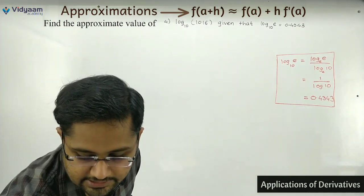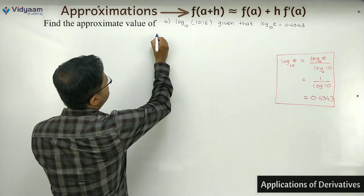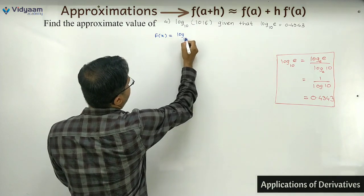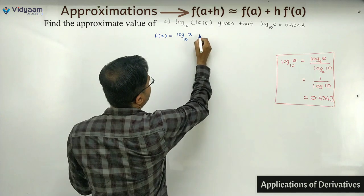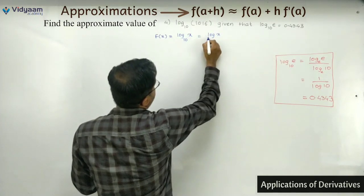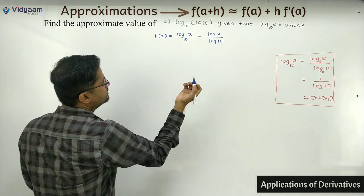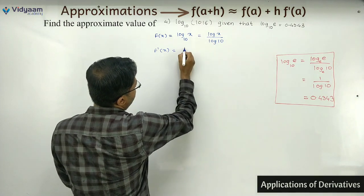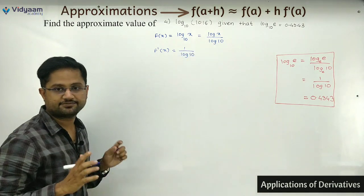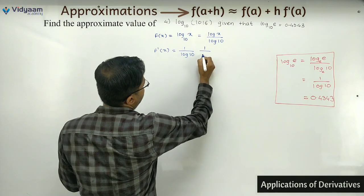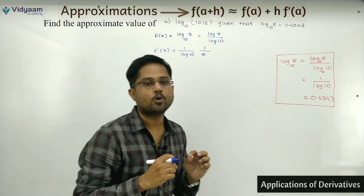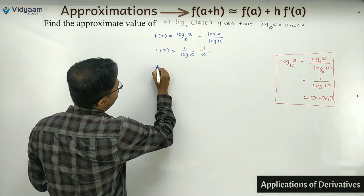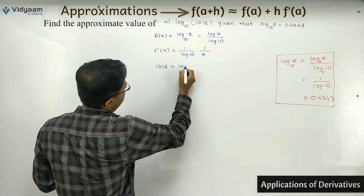Step 1: f(x) = log base 10 of x = log x / log 10. Step 2: f'(x) — since 1/log 10 is a constant, it stays as is, and the derivative of log x is 1/x. So f'(x) = 1/(x · log 10). Now split 1016 smartly as 1000 + 16, giving a = 1000 and h = 16.